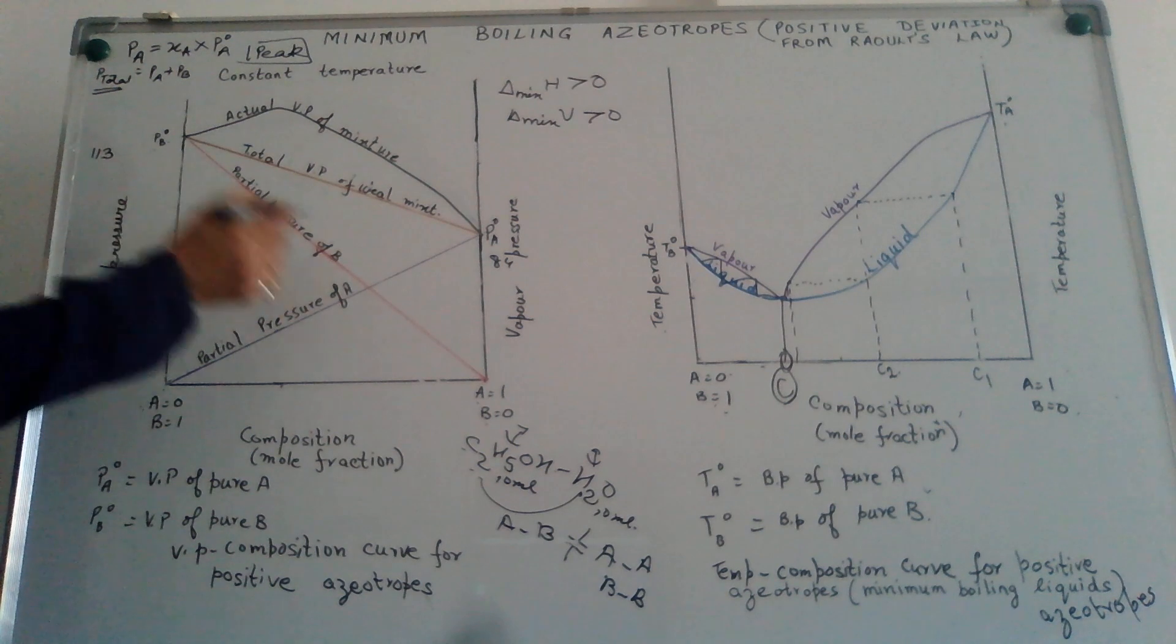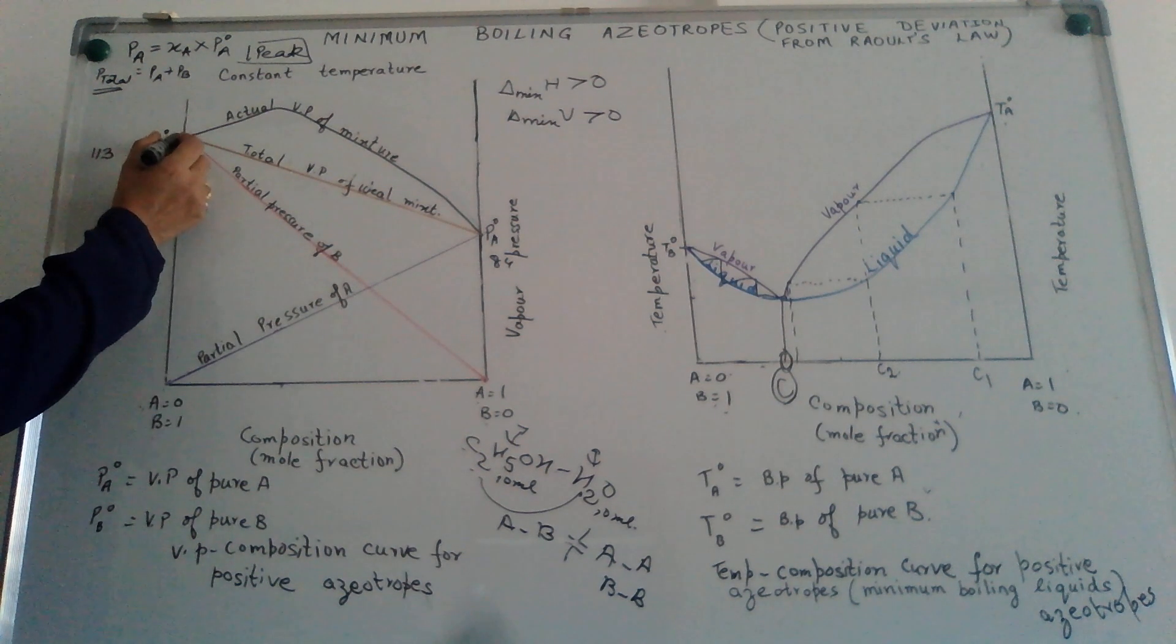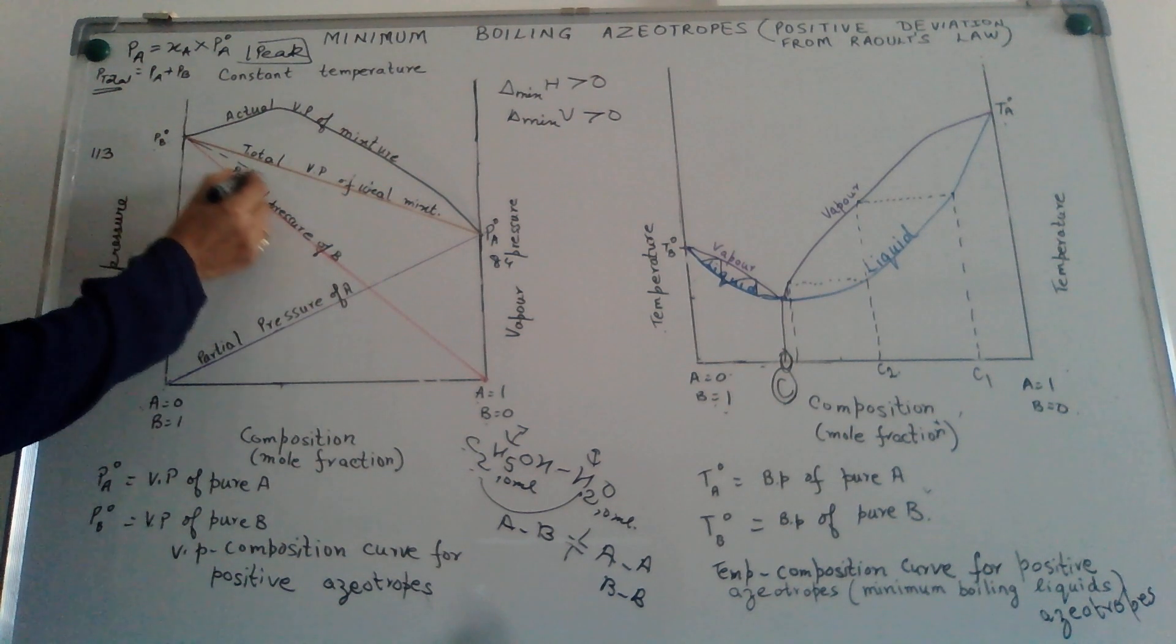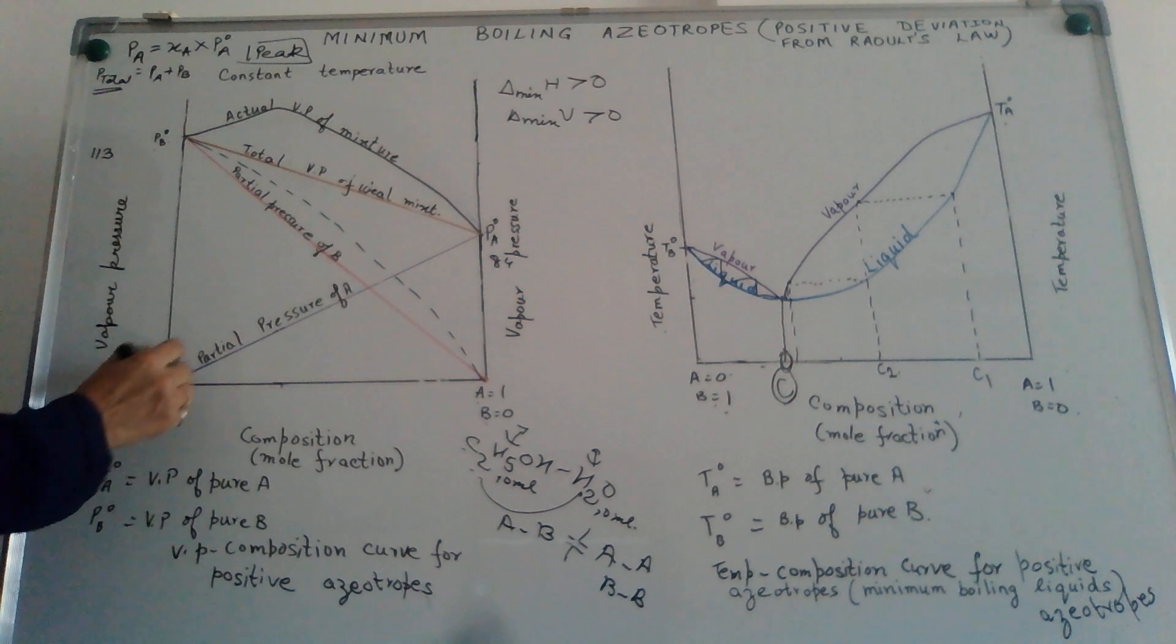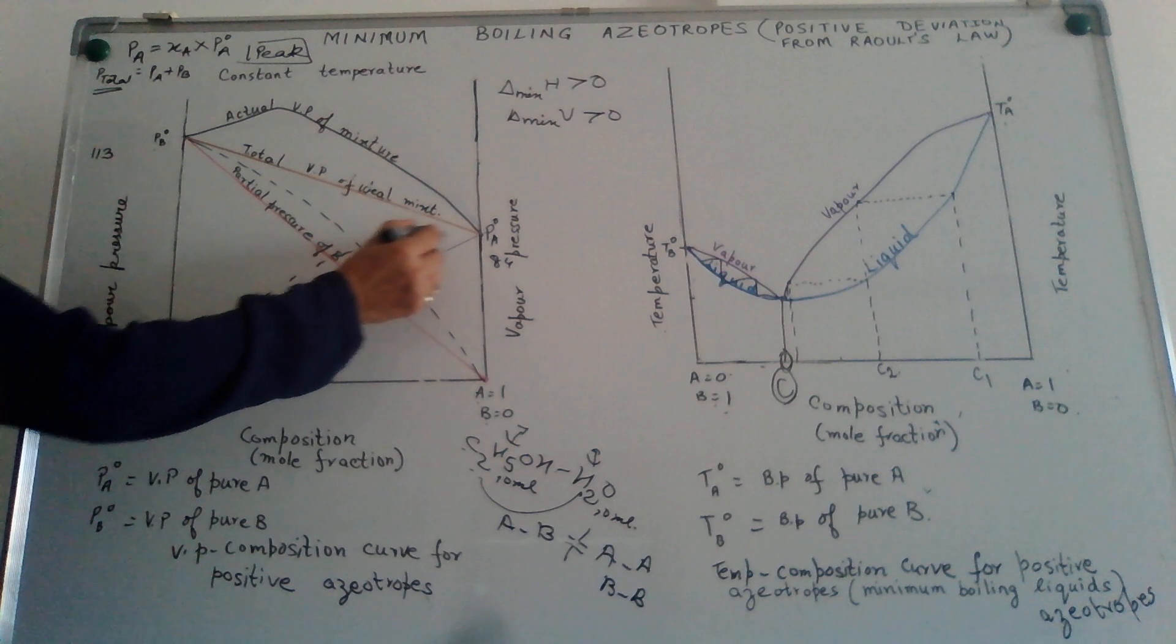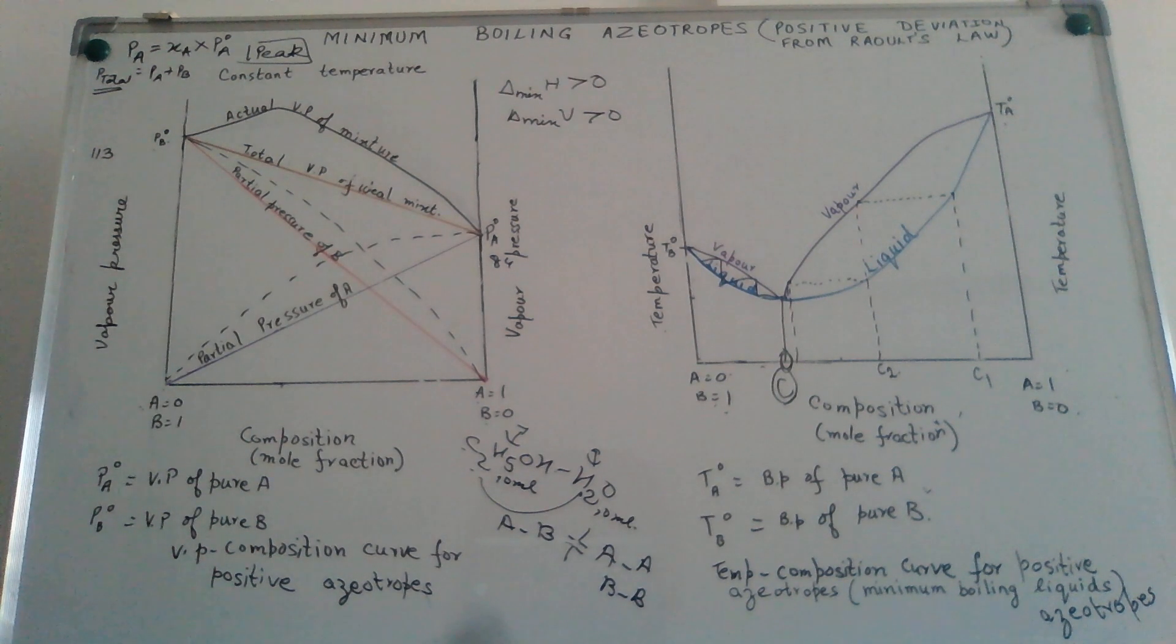The partial pressure of B will be more than expected. Partial pressure of A will also be more than expected according to the Raoult's law.